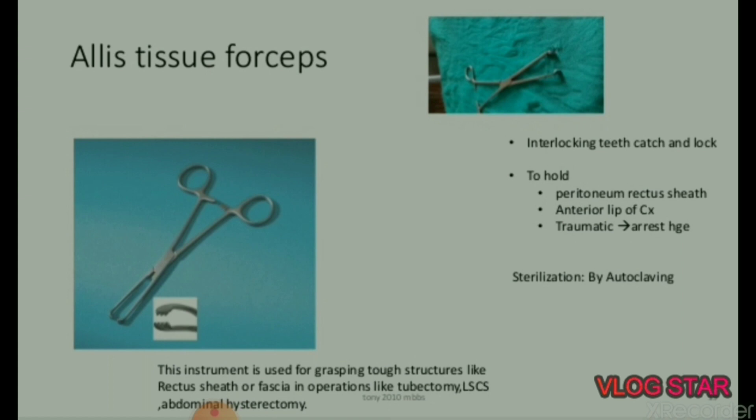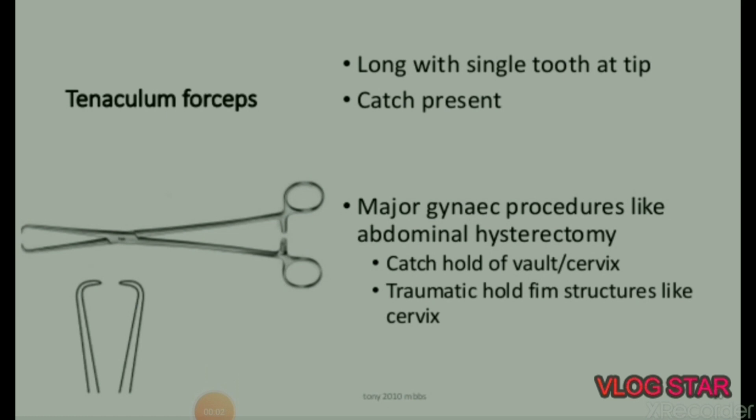Alice tissue forceps: used for grasping tough structures like rectus sheath or fascia in operations like tubectomy, LSCS, and abdominal hysterectomy. It has interlocking teeth with a catch and lock. Used to hold peritoneum, rectus sheath, and anterior lip of cervix. Sterilization by autoclaving.